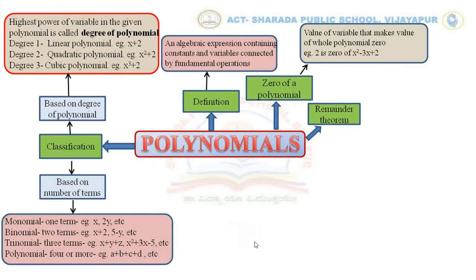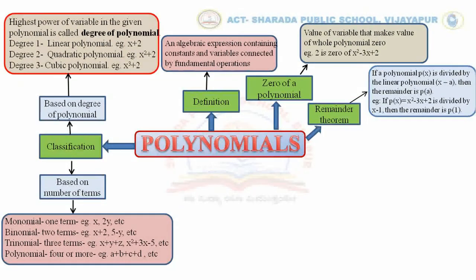Next, we discussed the Remainder Theorem. It states: if a polynomial p(x) is divided by the linear polynomial x minus a, then the remainder is p(a). For example, if p(x) equals x squared minus 3x plus 2 is divided by x minus 1, then the remainder is p(1). If the divisor is x plus 1, then the remainder is p(−1) — the sign is interchanged.